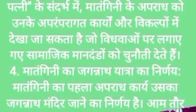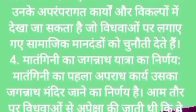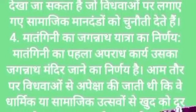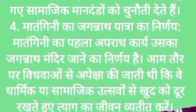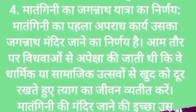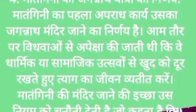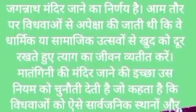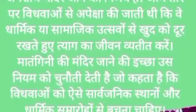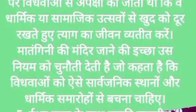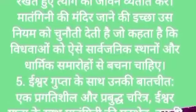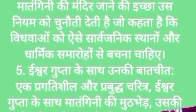Parivartan kari tatva: Atikarman ka tatparya sthappit mandandon ka ulanghan ya vichalan hai. Rajmohan ki patni ke sandarbh mein, Matangini ke apradh ko unke aparampragat karyon aur vikalpon mein dekha ja sakta hai jo vidhaon par lagaye gaye samajik mandandon ko chunauti dete hain. Matangini ka pehla apradh kary uska Jagannath Mandir jane ka nirnay hai. Vidhwaon se apeksha ki jati thi ki ve tyag ka jeevan vyatit karen, apne aap ko dharmic ya samajik utsavon se door rakhen.